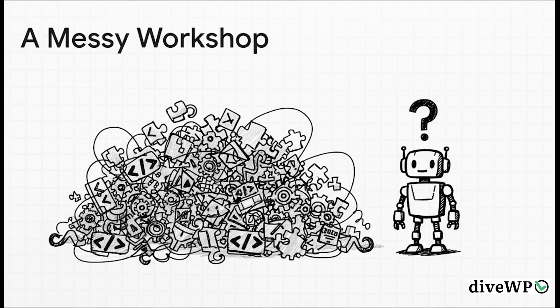Think of it like a really messy workshop. All the tools you need — your custom functions, those Ajax handlers, all the different hooks — they're just kind of thrown everywhere. There's no organization, no labels, no inventory. Now, if you're a human developer, you can eventually find what you're looking for by reading docs or digging through code. But for an AI, it needs structure. To an AI, this is just a nightmare.